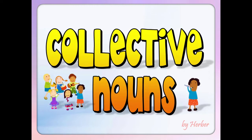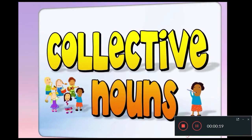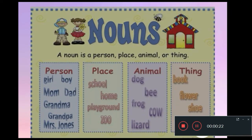Okay, guys. As I told you, today we are going to learn about collective nouns. But first, do you remember what is a noun? Can you tell me or mention what is a noun? When we talk about nouns, we refer to a person, a place, an animal, or a thing. For example, if we refer to a person, we can say girl, boy, mom, grandma.